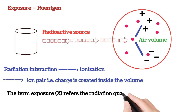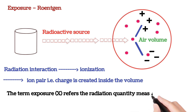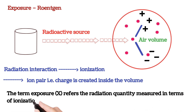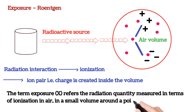The term exposure refers to the radiation quantity measured in terms of ionization in air in a small volume around a point. It means if ionization is more inside the volume, that means the charge created in this volume is more — it means exposure is more, and it means radiation quantity is more.